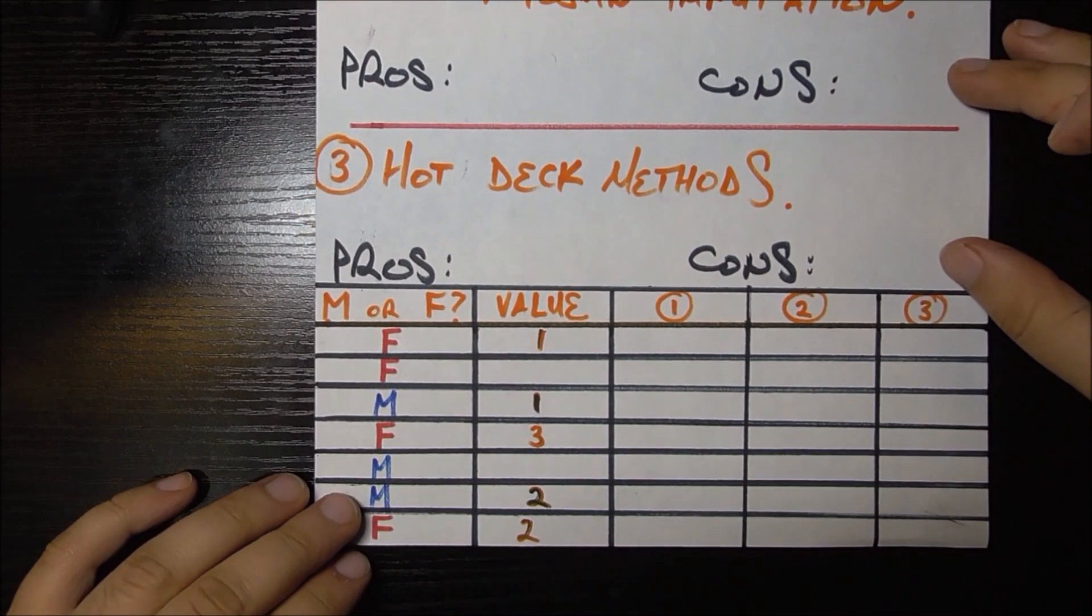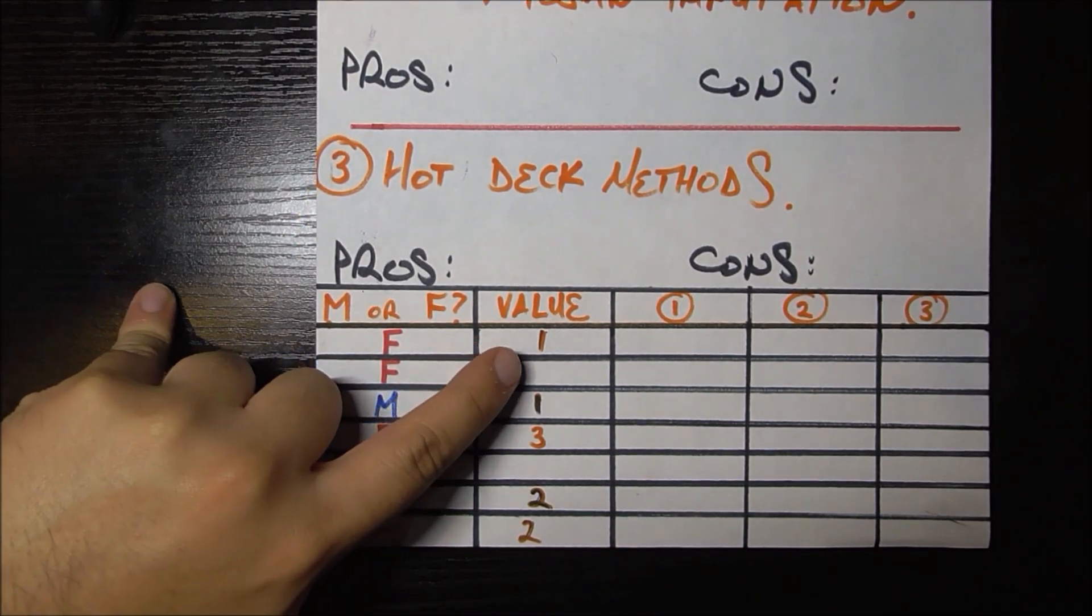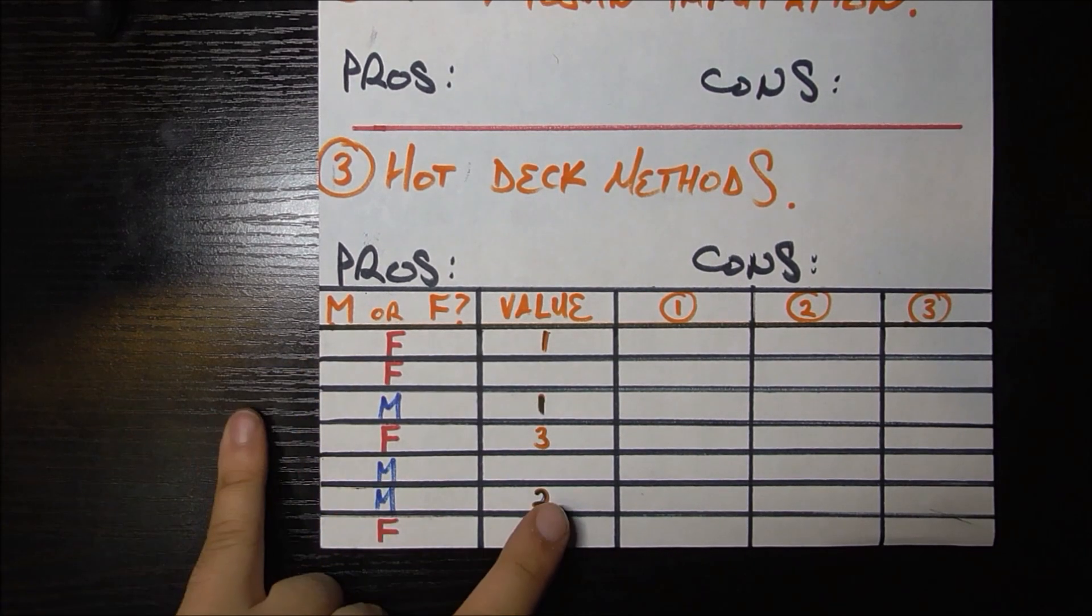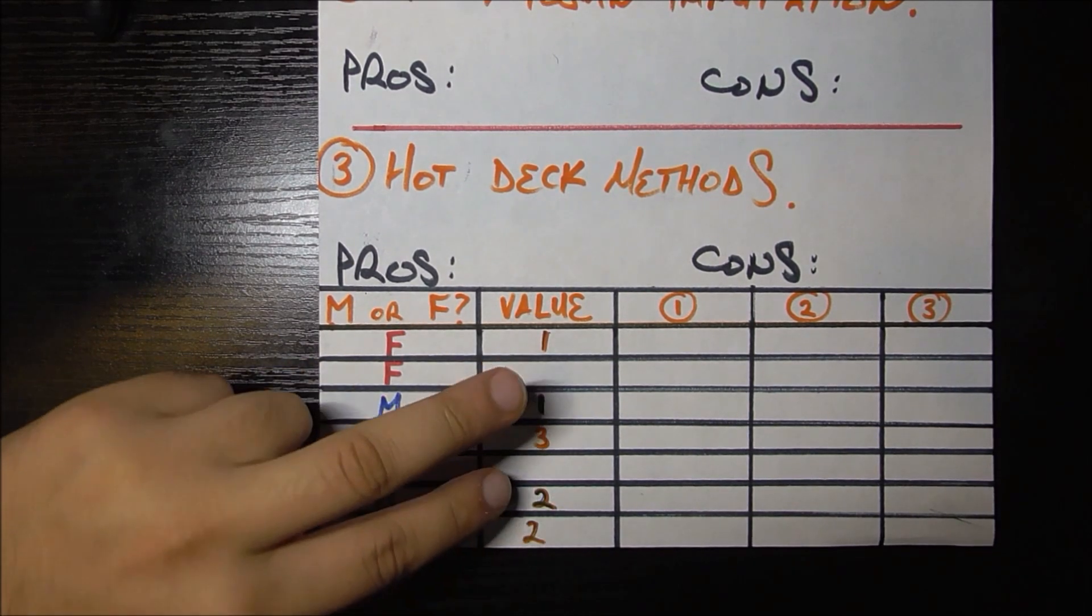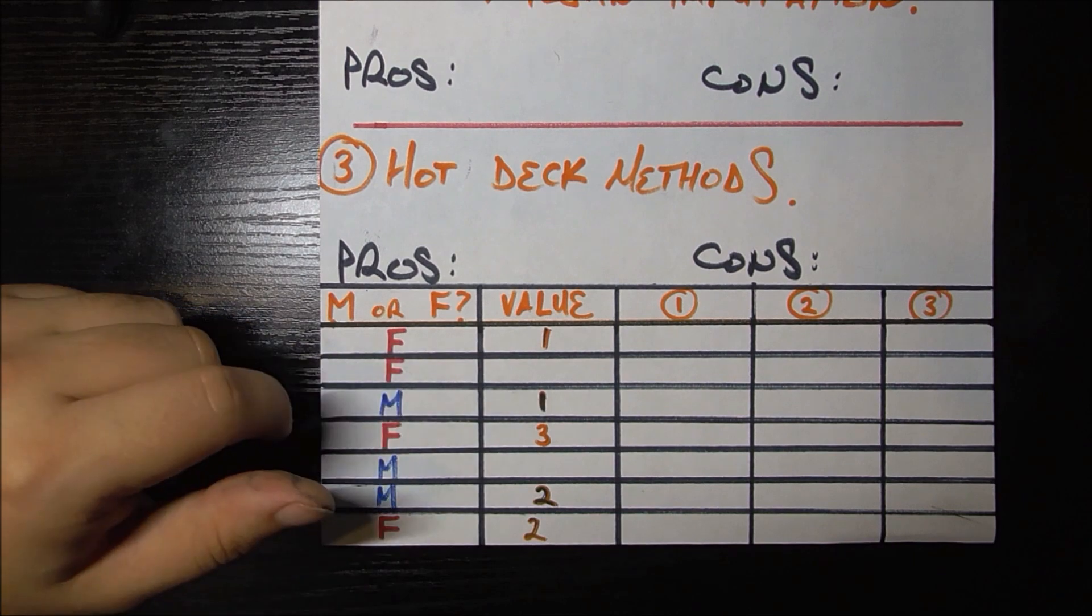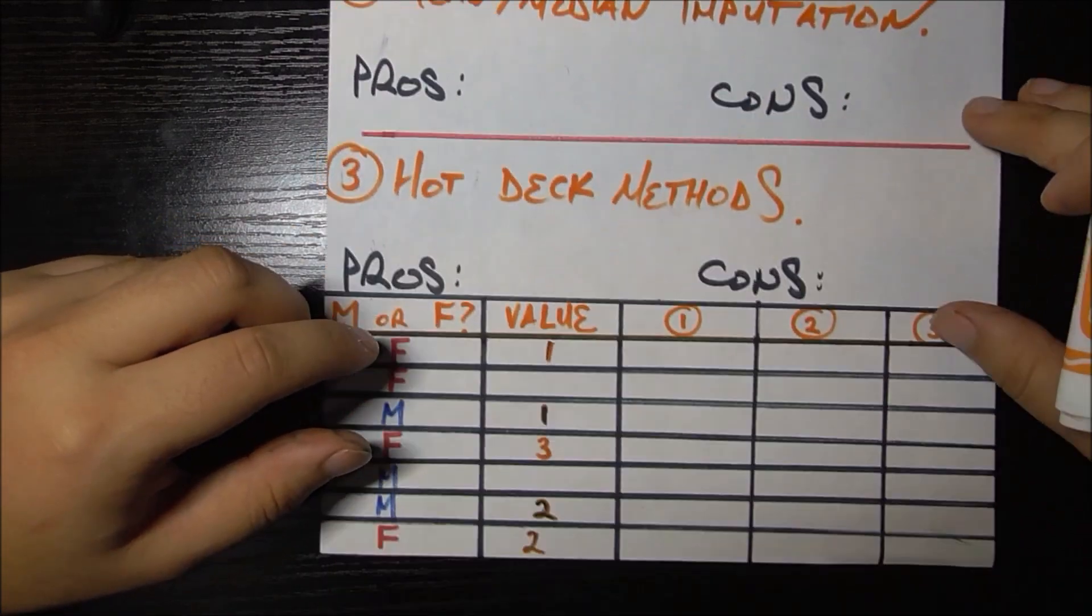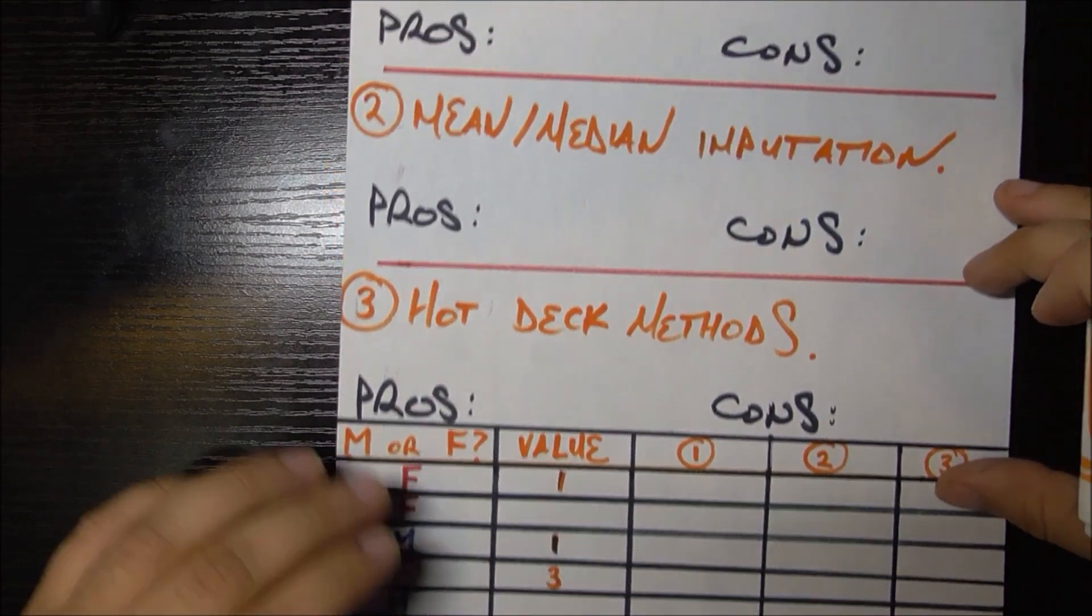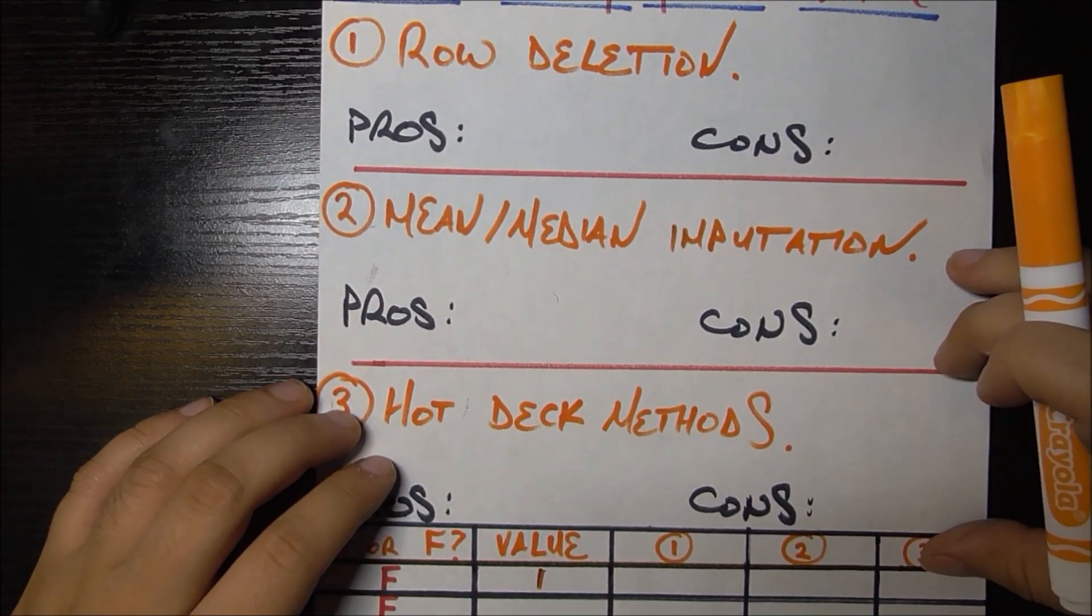As we can see, there is of course missing data in our table. Some people have answered, this female answered one, this male answered two, but there's still two values here which are missing. So through these three methods we're going to be filling in different things for all these missing values and we'll see the pros and cons of each. So without further ado, let's get into it.